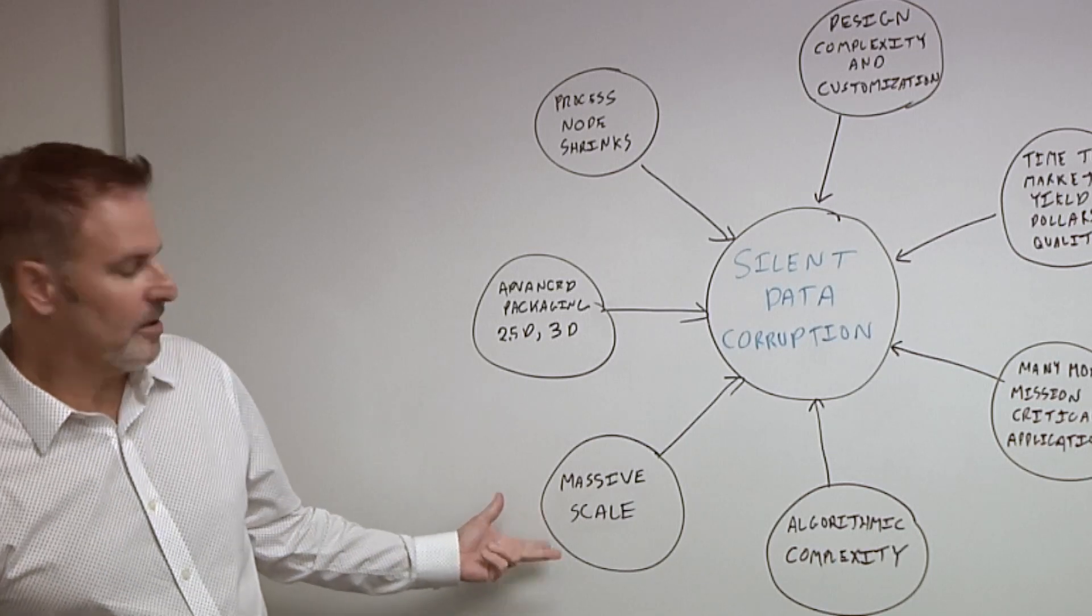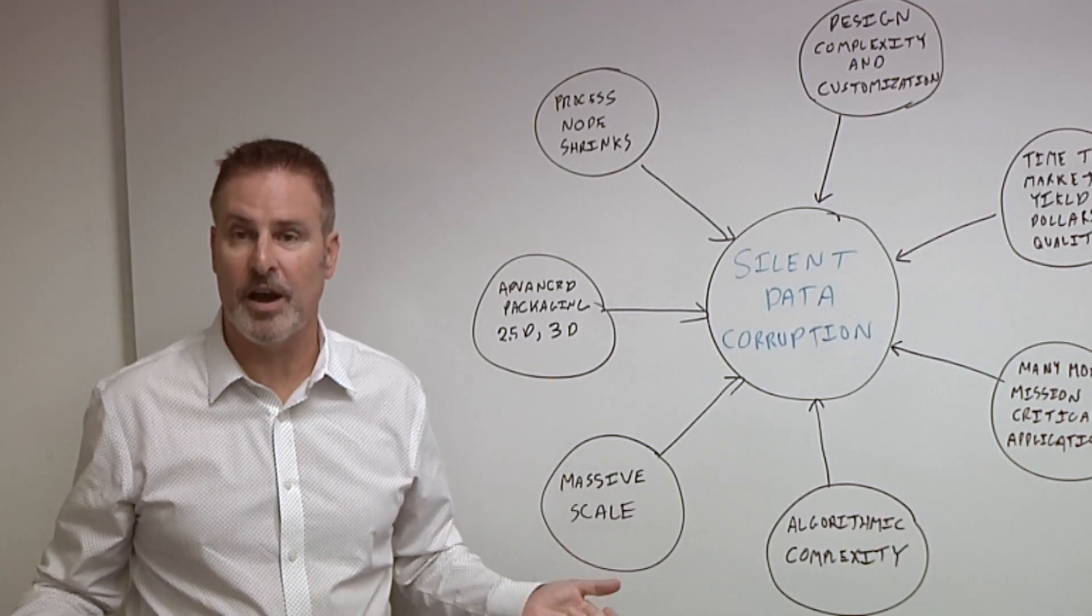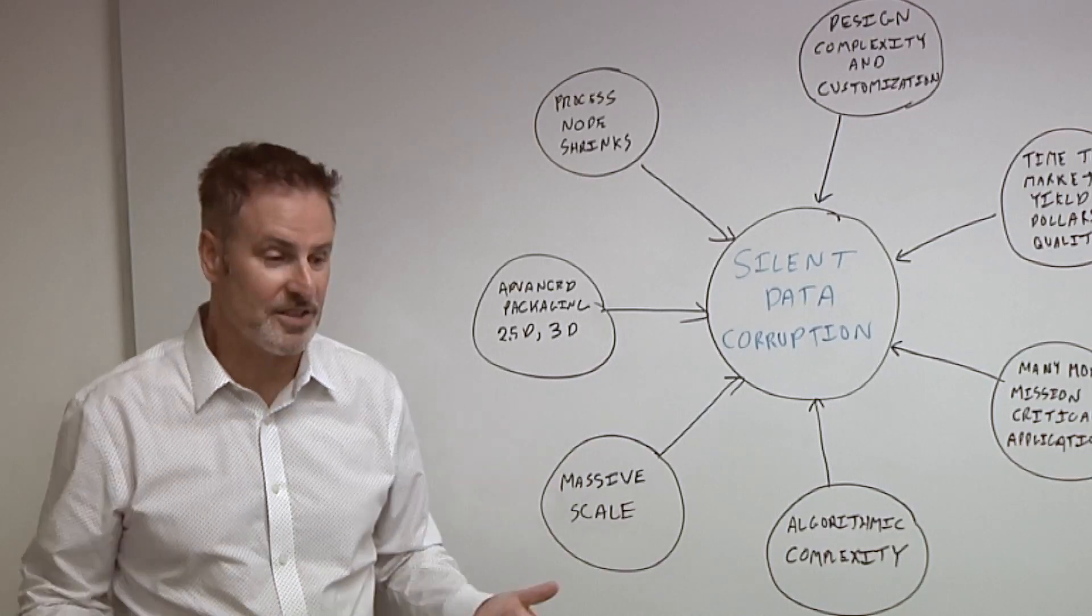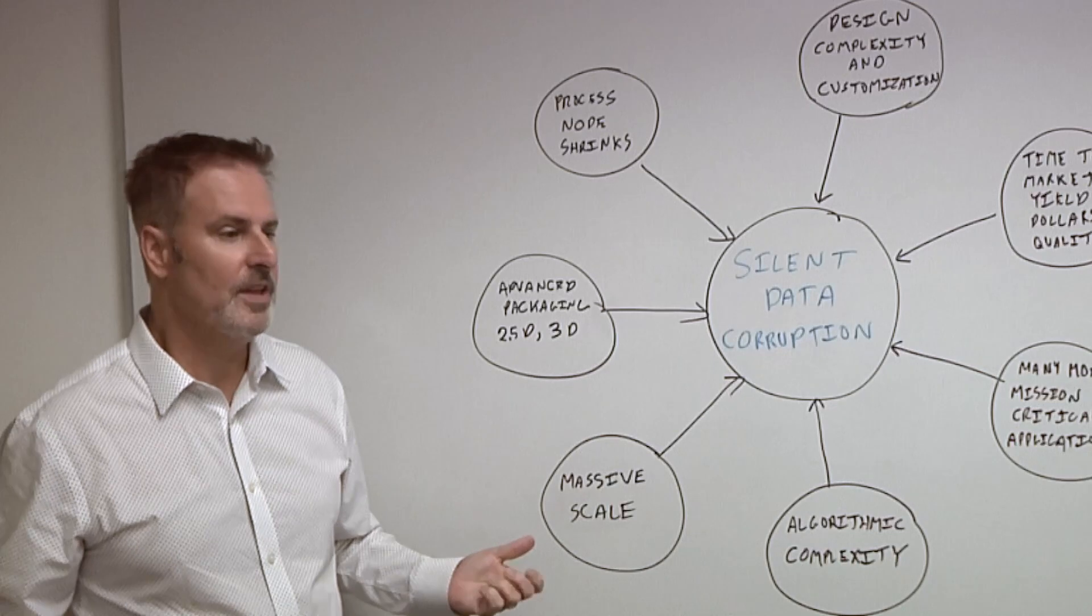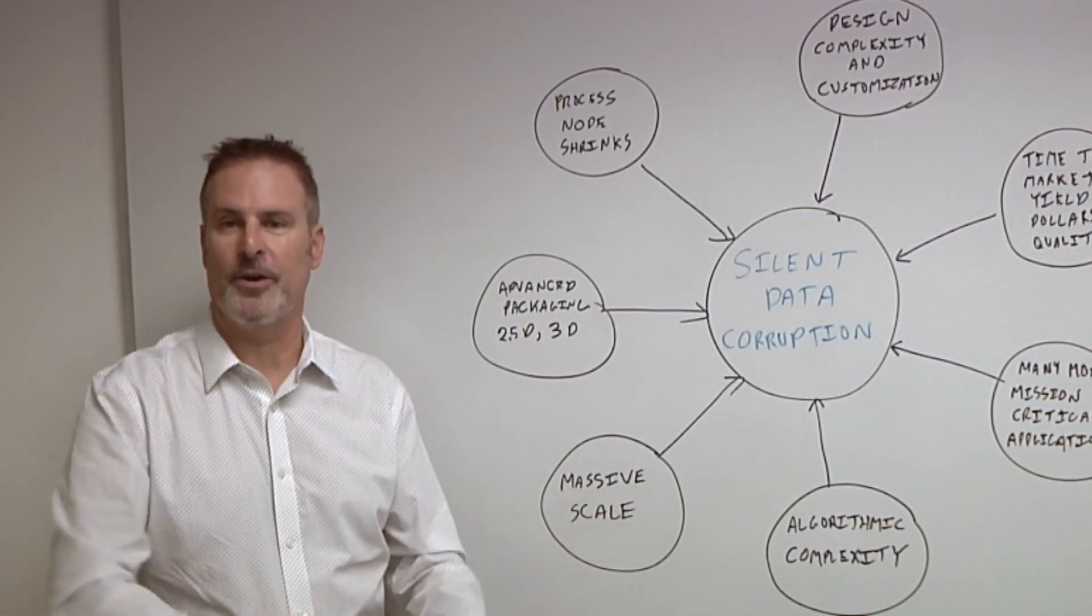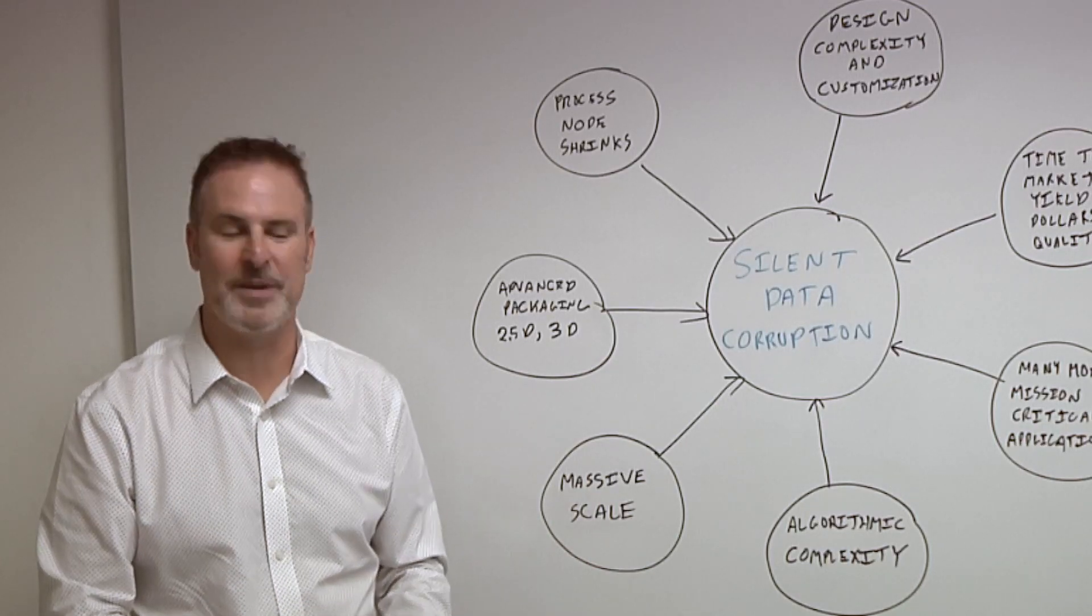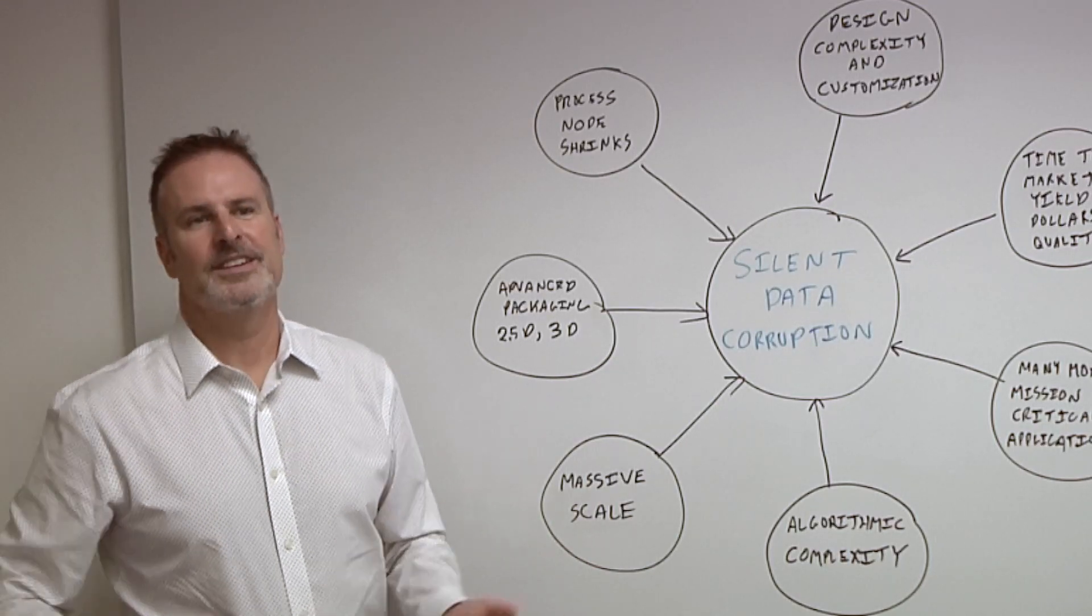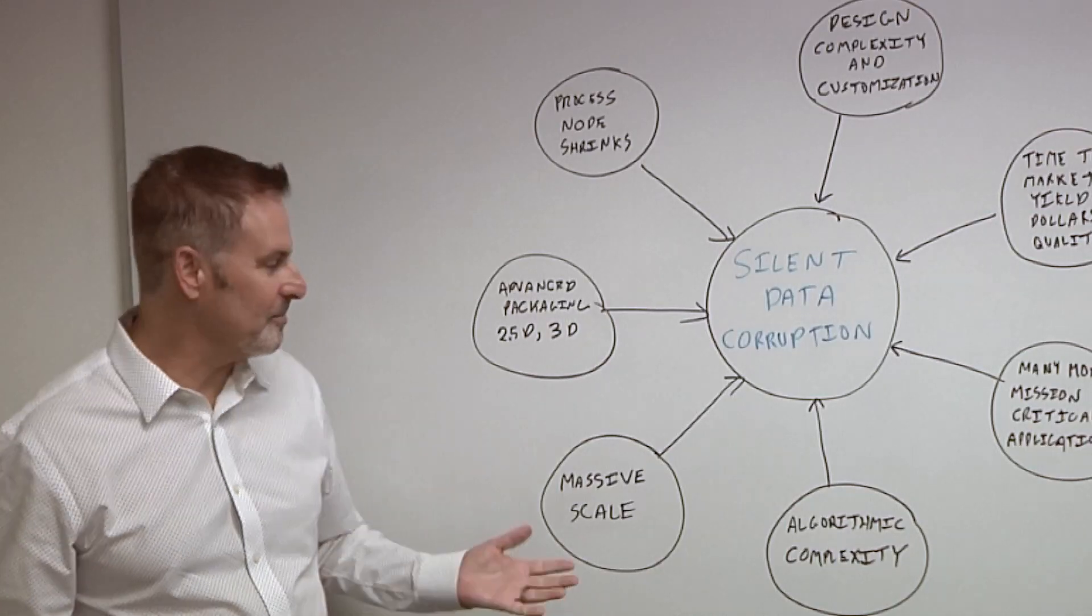The massive scale. I mean, this is why the hyperscaler companies like Google and Meta are coming to ITC asking for help in the first place. They're running at such massive scale. The problems that maybe we used to be able to deal with, like for example, our cell phone all of a sudden starts doing something unexpected and we reboot it, but that's not the kind of solution that's really going to work at massive scale.